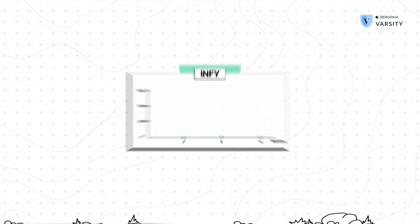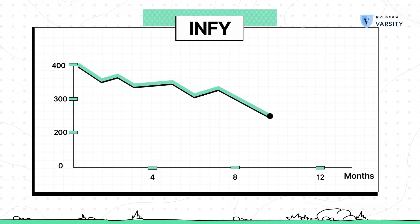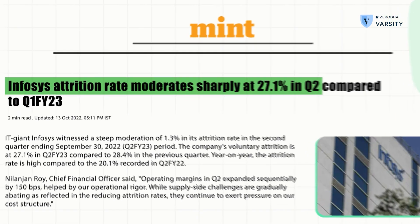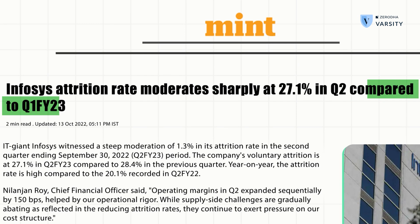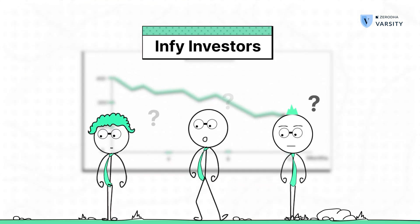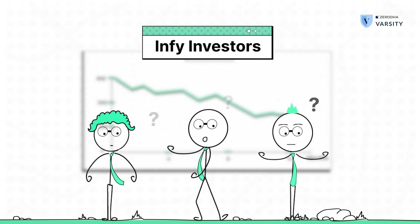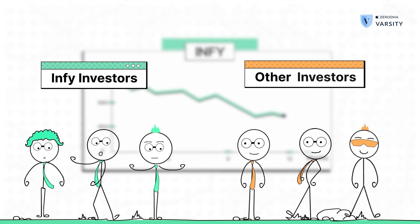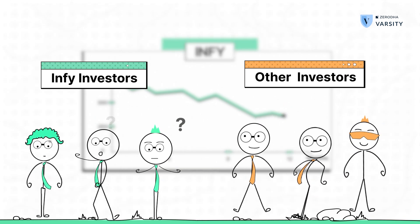Unsystematic risk, on the other hand, is risk specific to the stock that you've invested in. For example, the price of an IT stock going down because of high attrition rate is a company-specific risk. It will only impact the investors of this particular company and won't impact other investors in the market. When you diversify a stock portfolio, you mitigate or control the unsystematic risk.